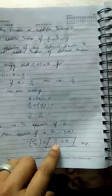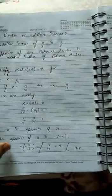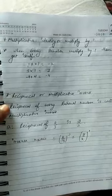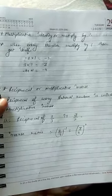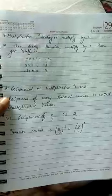So it is the value of x, hence proved. Now multiplicative identity, or multiply by 1. When every number is multiplied by 1, then it gets itself. Then minus 2 multiplied by 1 equals minus 2, 3 multiplied by 1 equals 3, minus 4 multiplied by 1 equals minus 4.